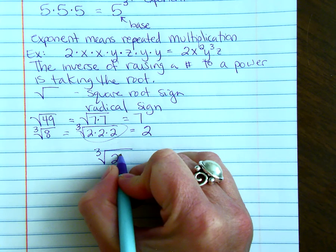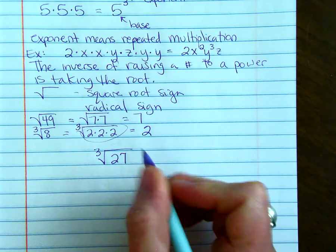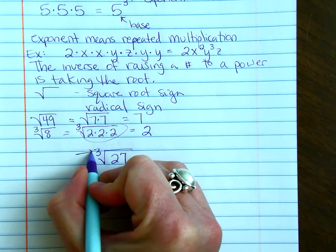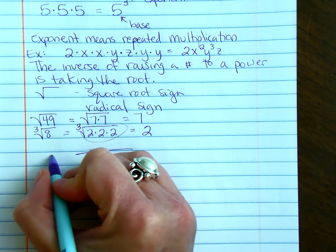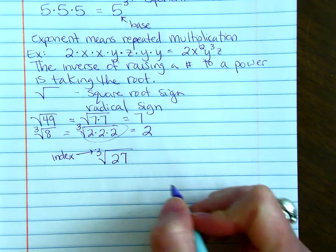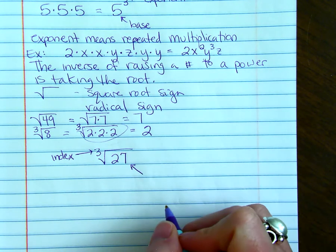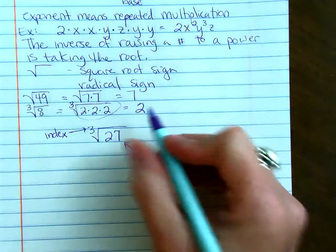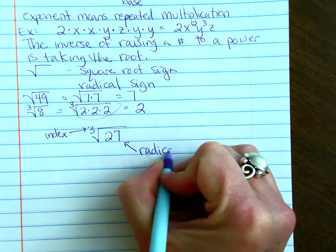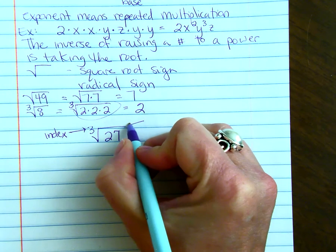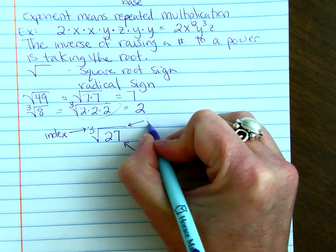Let's write some vocabulary. The little 3 on the root symbol is called the index. The 27, or the number underneath the radical sign, is called the radicand. The sign itself is called the radical.